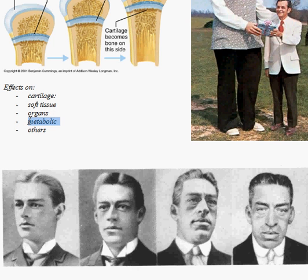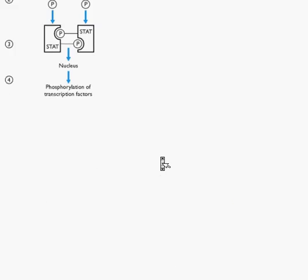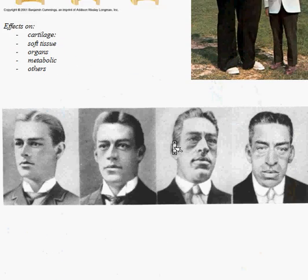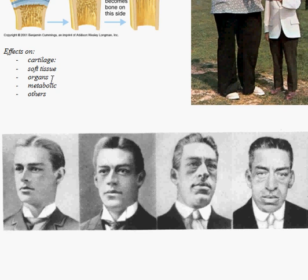The metabolic symptoms include increased glucose in the body, which results in insulin resistance, so these people end up developing diabetes — consistent with the decreased glucose uptake we discussed. They are also more prone to colon cancer, which is another significant morbidity. With soft tissue changes, you'll also see very large hands and very large feet.